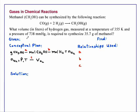Gases in chemical reactions. Methanol, CH3OH, can be synthesized by the following reaction: CO gaseous plus 2 H2 gaseous react to form CH3OH gaseous. What volume in liters of hydrogen gas measured at a temperature of 355 K and a pressure of 738 mmHg is required to synthesize 35.7 g of methanol?